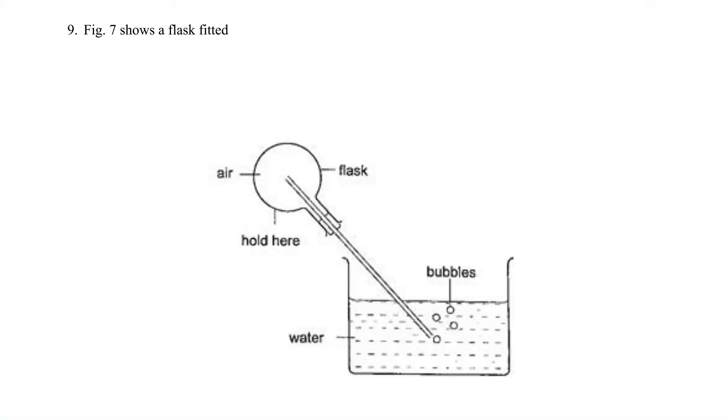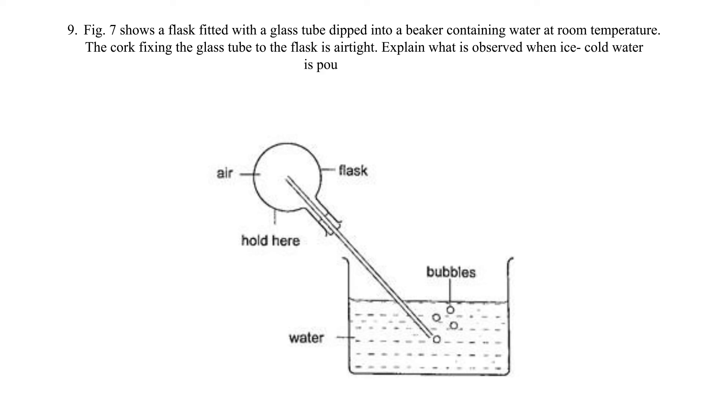Question 9: Figure 7 shows a flask fitted with a glass tube dipped into a beaker containing water at room temperature. The cork fixing the glass tube to the flask is airtight. Explain what is observed when ice cold water is poured on the flask. Solution: Water rises up the tube into the flask, or water is sucked into the tube, or bubbles are seen momentarily.